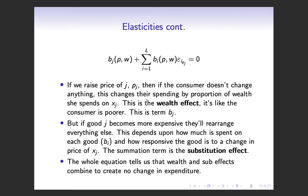If we raise the price of j slightly and the consumer doesn't change their quantities, this must change the proportion of wealth she spends on that good. For instance, if every week you buy 10 cheeseburgers and the price goes up and you don't rearrange, the proportion of your total wealth spent on cheeseburgers goes up. That's the wealth effect — when price rises and you buy the same amount, you effectively feel relatively poorer. That channel is captured by this term.